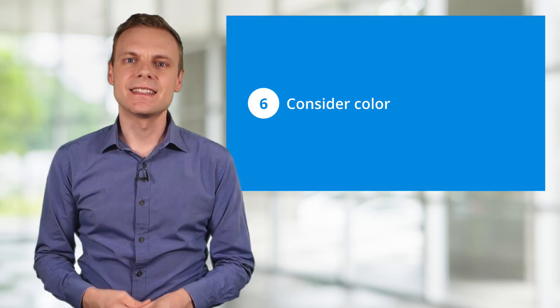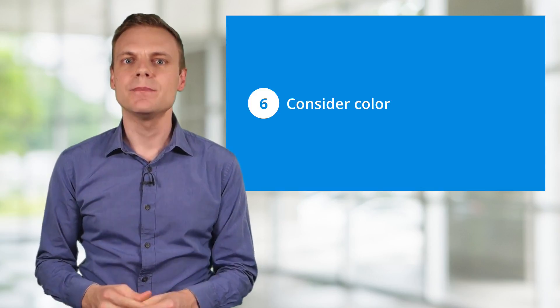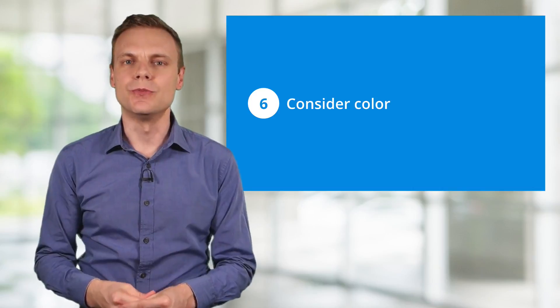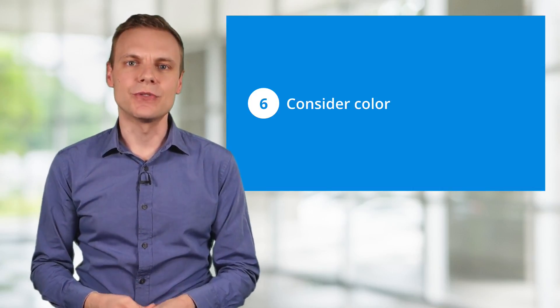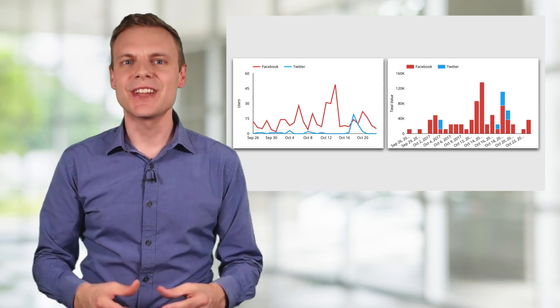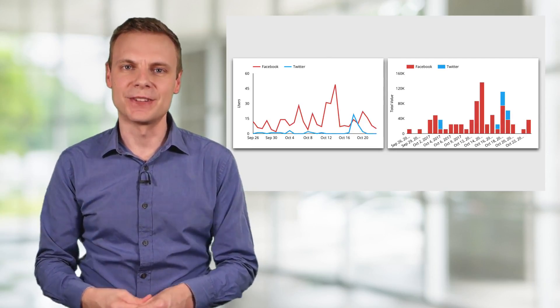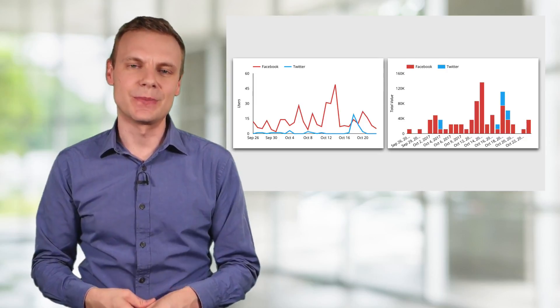Tip number six is to consider the colours you use in your charts. If you have multiple graphs that present the same data, like a social dashboard that includes two bar charts, then make sure the colour for each social network is consistent. In this example you can see that we are always presenting data from Twitter in blue, and data from Facebook in red. It makes it much easier to interpret the data as we look at the two different charts. And if you are looking to create a social dashboard, then check out my tutorial on how you can report on social media using Google Data Studio. You can find a link to the video in the description below.